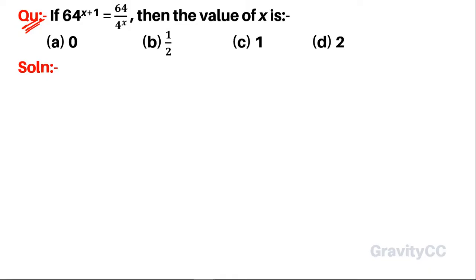Question: if 64 to the power x plus 1 is equal to 64 upon 4 to the power x, then the value of x is. So here, given 64 to the power x plus 1 is equal to 64 upon 4 to the power x.